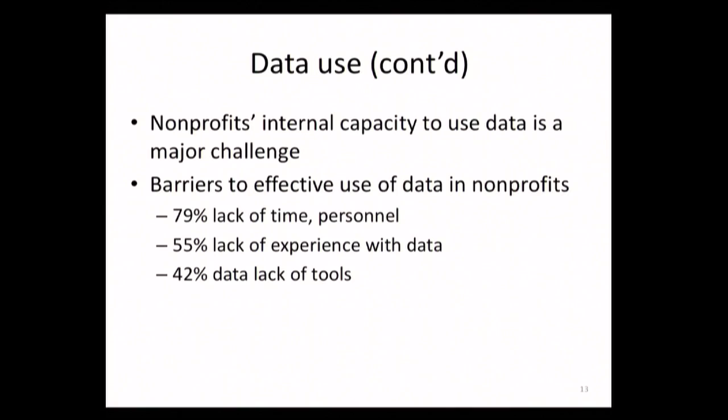The last point about internal capacity is major. If we have the data, why aren't we using it? Categories that would be no surprise: lack of time to make use of the data, lack of experience, lack of data tools. If we do everything in Excel, how far can we get? You can get pretty far as an organization with Excel, but you need someone good at it. It's not just that data are hard to get — there has to be a process that supports its use within a nonprofit.